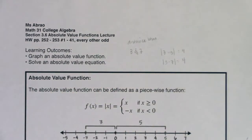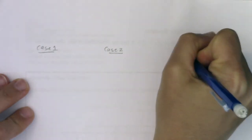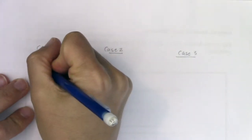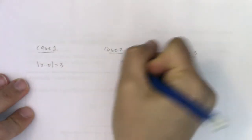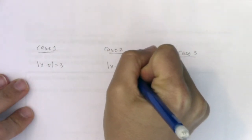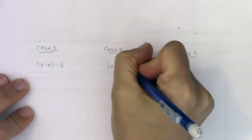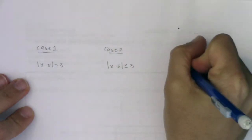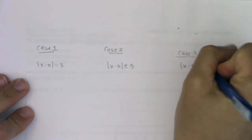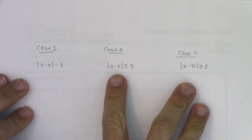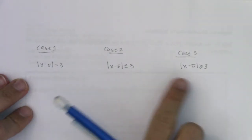I want to review some of the things we talked about before. We had three cases back in sections 2.6 and 2.7, where we would have something like: the absolute value of x minus five is equal to three; the absolute value of x minus five is less than or equal to three; and the absolute value of x minus five is greater than or equal to three. These don't have to be strict inequalities — they could be just a less than or just a greater than.